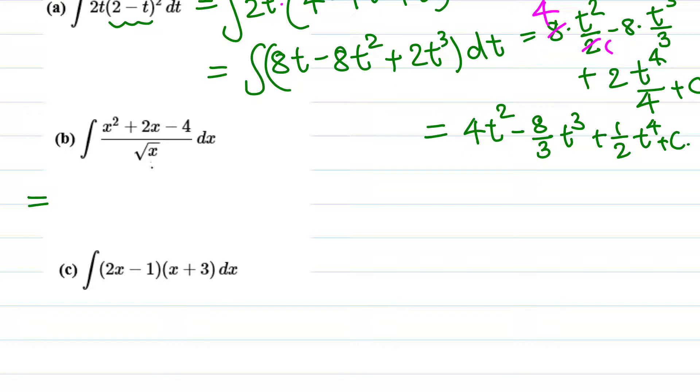We can move this up - that means x raised to negative 1/2. We can distribute or separate into three fractions: x² over root x, which is x^(1/2), plus 2x over root x, minus 4 over root x.